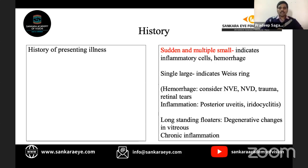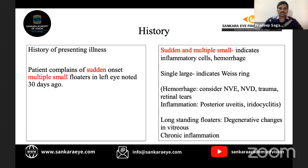Floaters due to inflammation are usually seen in posterior uveitis and iridocyclitis. If the floater is long-standing, it is mostly due to degenerative changes in the vitreous or chronic posterior uveitis. In this patient, the complaint is sudden onset multiple small floaters in the left eye, noted 30 days ago, which have remained almost similar since then.